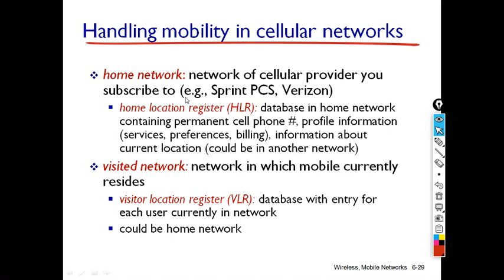Now, there are different terminologies here. One is the home network — it is the network of a cellular provider for a particular user or subscriber. For example, if our mobile is registered in Karnataka, that is the home network. This home network maintains the Home Location Register, HLR.